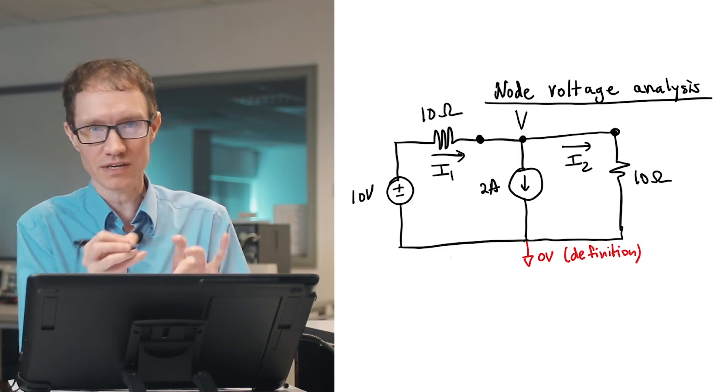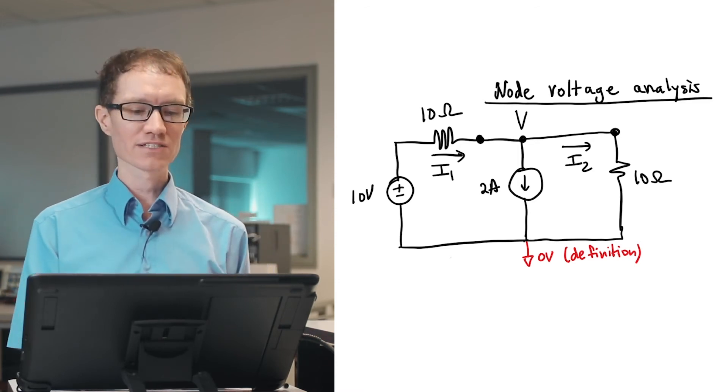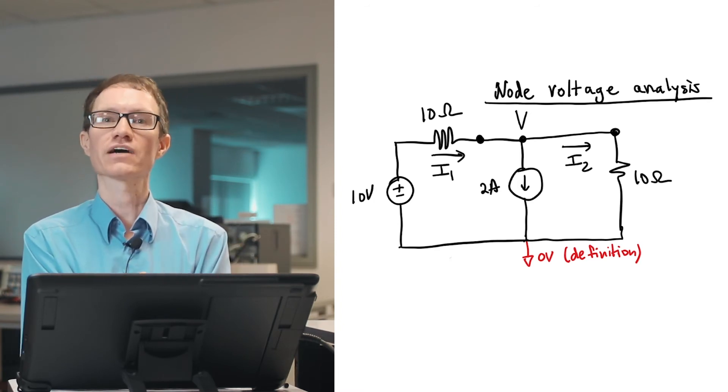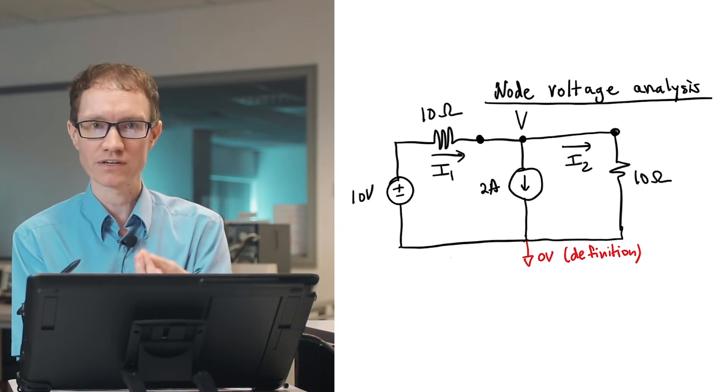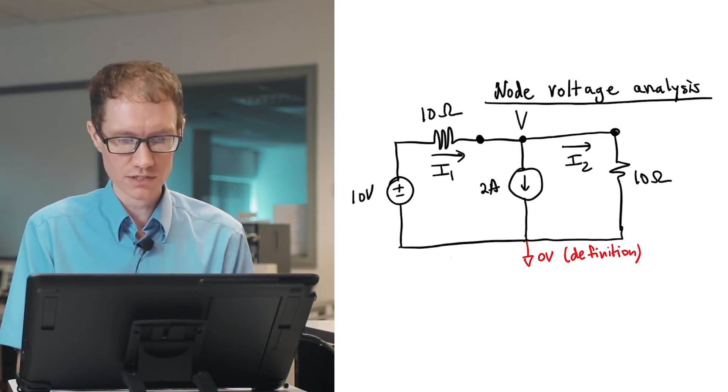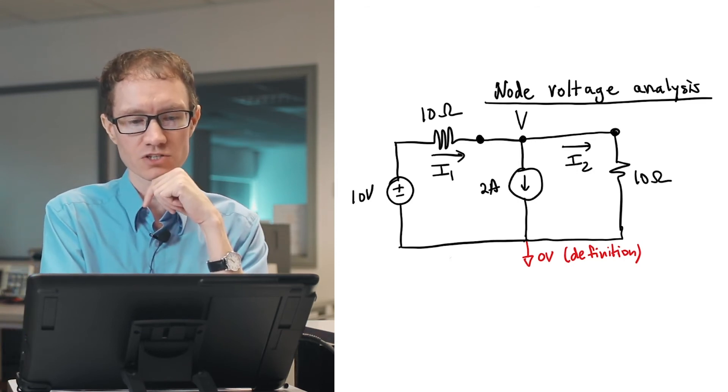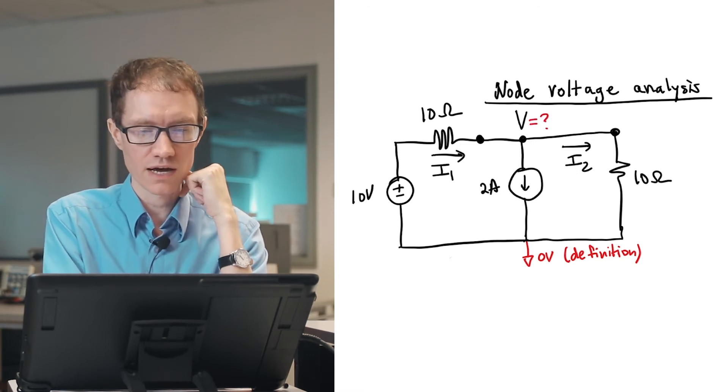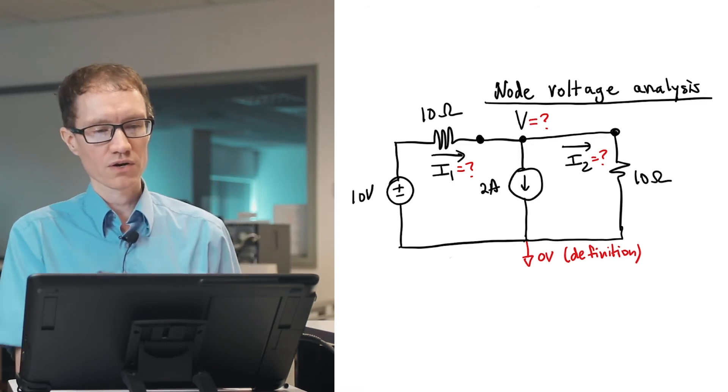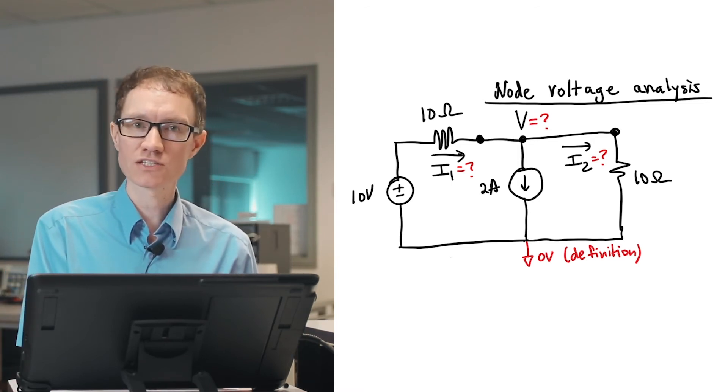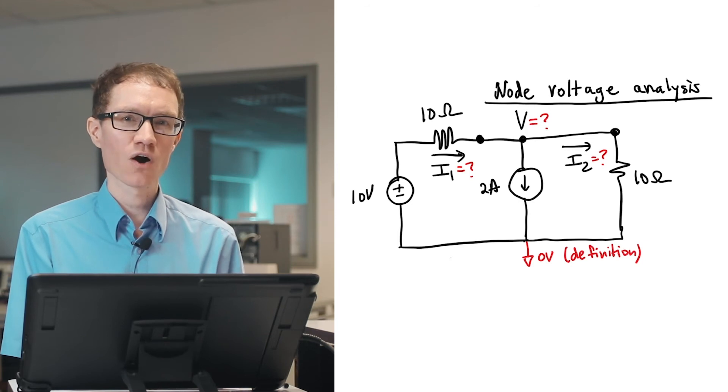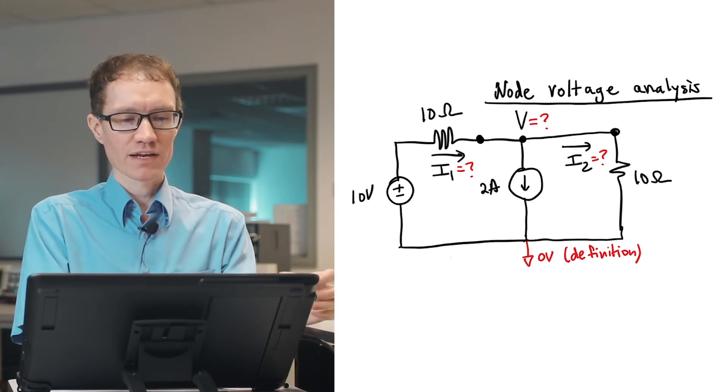And any place on the circuit will work. You can define any node as your ground point. As long as you use that ground point consistently in your circuit, then all the voltages you label on your circuit diagram will be referenced to that same point. And all of the currents and voltages that you calculated will then be consistent with that point. So it now makes sense for me to just say what is V, what is I1, and what is I2. So rather than use the Kirchhoff voltage law where we have loops, let's just use node voltage analysis.